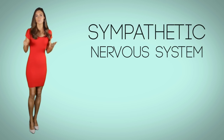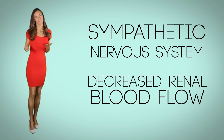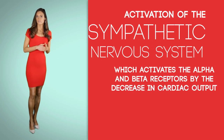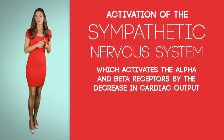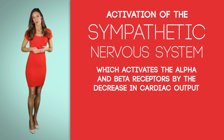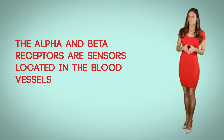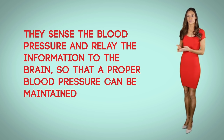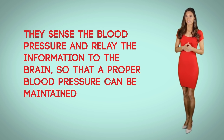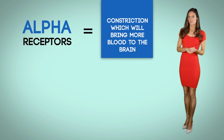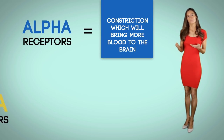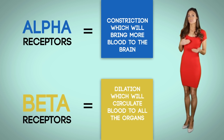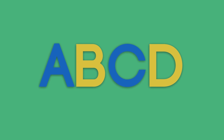The lower cardiac output results in activation of, one, the sympathetic nervous system, and two, decreased renal blood flow. The sympathetic nervous system activates the alpha and beta receptors in response to the decrease in cardiac output. The alpha and beta receptors are sensors located in the blood vessels that sense blood pressure and relay information to the brain so that proper blood pressure can be maintained. Alpha receptors equal constriction, which brings more blood to the brain, and beta receptors equal dilation, which circulates blood to all of the organs.